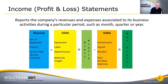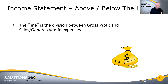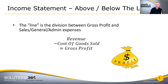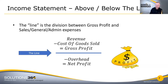Let's talk about 'the line.' Some of you have heard: is it above the line or below the line? The line is simply where gross profit is separated from SG&A. Revenue minus cost of goods sold equals gross profit — that is the line separating overhead from the bottom line, which is net profit. The most important thing from your accounting perspective is whether or not your bottom line is positive.